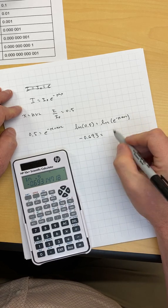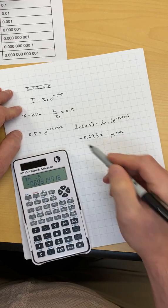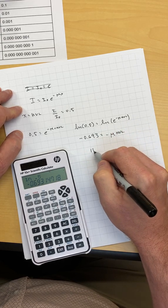Remember, the logarithm is the exponent, so this is going to be minus mu HVL. These two minus signs cancel out. Pull the mu over here, and I get HVL.